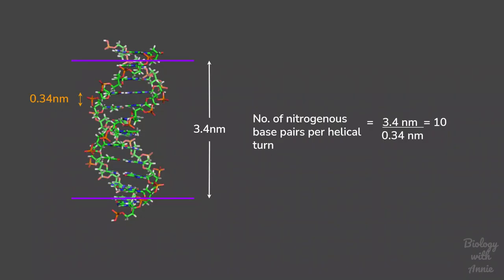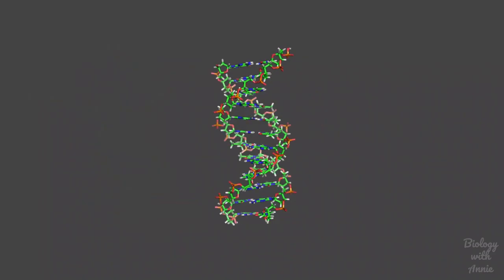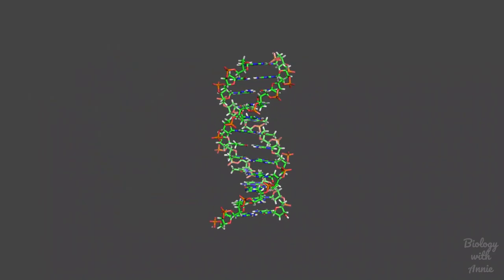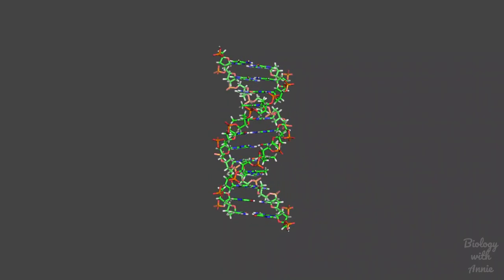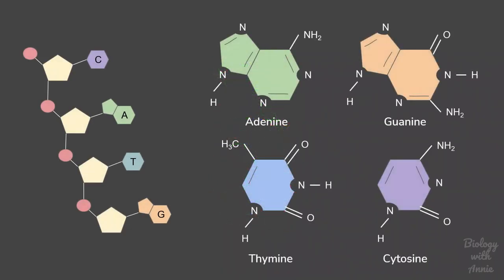With this, the backbone of DNA was understood. All they needed to know now was how the nitrogenous bases are arranged to fit in this backbone. DNA contains four different nitrogenous bases: adenine, guanine, cytosine, and thymine.